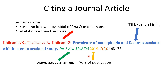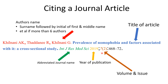The fourth component is the year of publication. In this case, the article was published in 2019. The fifth element is the volume and the issue of the journal. Here, seven is the volume and, in brackets, we write the issue number — in this case, the second issue. So this article was published in the second issue of the seventh volume of the International Journal of Research in Medical Sciences.